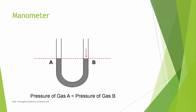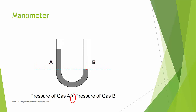Similarly, if pressure B is actually bigger than pressure A, it pushes down more and you get a height difference between level B and level A. This height, whether big or small, indicates the difference between pressure A and pressure B.